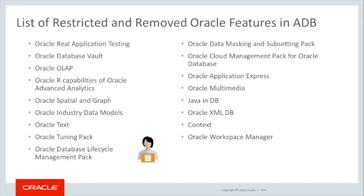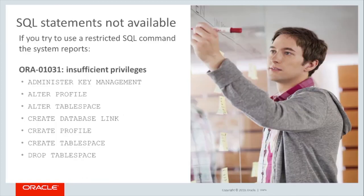If an application is being considered for migration to ADB, or if you intend to develop an Oracle Database application with any of these restricted features, be aware that they may not work with Autonomous Database. In this slide is a list of all the features that are restricted or removed from Autonomous Database. Many SQL statements used for resource management are not available in ADB because these functions are managed automatically. If you run a command that is restricted, you will get an ORA-01031 insufficient privilege error message.